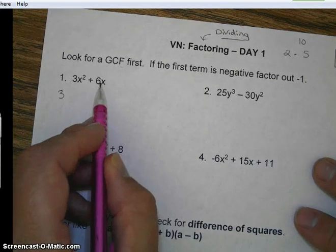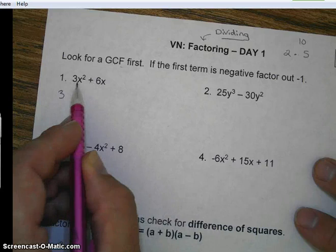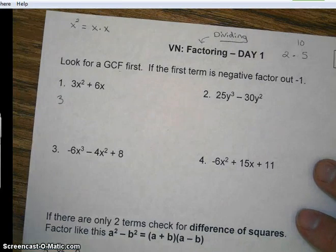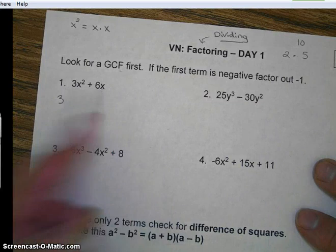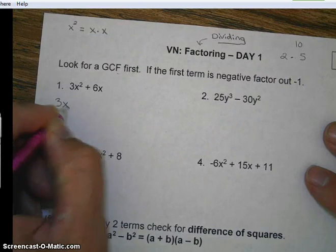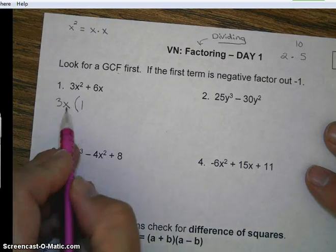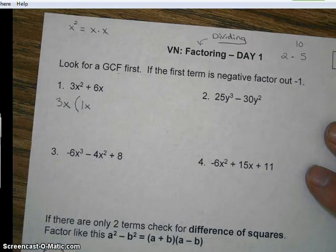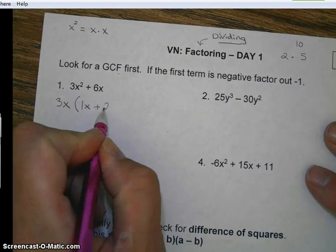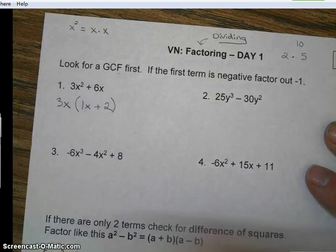Now, when it comes to letters, you ask yourself, what's the most number of x's that I can take away from both of these? So we have x squared. x squared is x times x. So that means we have two x's here. x is just 1x. So what's the most number of x's I can take away from both? 1x. So I'm going to take away 1x. So dividing, 3 divided by 3? 1. I took away an x from an x squared, leaving me with x. Bring down the plus. Back to division. 6 divided by 3? 2. And if I take an x away from an x, that leaves me with no x's. And that's your factors.